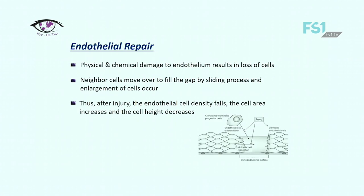Regarding endothelial repair: physical and chemical damage to endothelium results in loss of cells. Neighboring cells move over to fill the gap by a sliding process and enlargement of cells occurs. Thus after injury, endothelial cell density decreases, cell area increases, and cell height decreases. When there is damage to the endothelium, due to the sliding process the cells become flatter as they try to cover the damaged area.